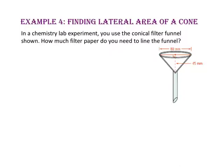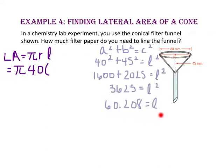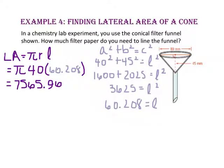In example 4, we will find the lateral area of a cone. In a chemistry lab experiment, you use a conical filter funnel. How much filter paper do you need to line the funnel? The lateral area equals pi times the radius times the slant height. The radius is half the diameter, or 40 millimeters. To find the slant height, we use the Pythagorean theorem: 40 squared plus 45 squared equals the slant height squared. The slant height is approximately 60.208. So 60.208 times 40 times pi is approximately 7,566 square millimeters.